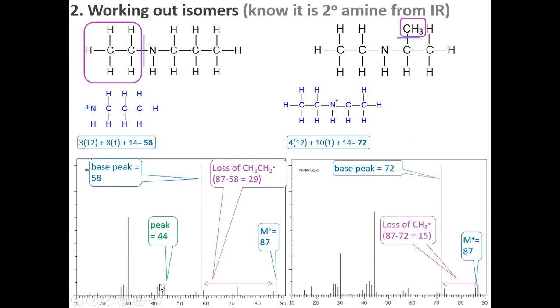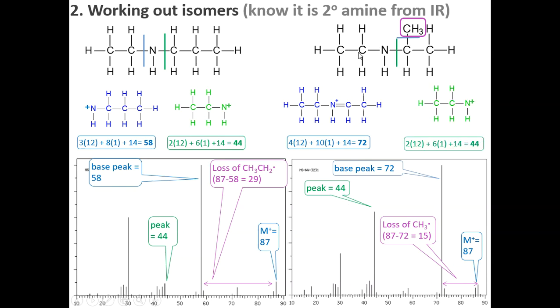We also have a peak at 44, and that is due to it breaking on this side. So remember, it could either break over here or it could break on the other side. And if it broke on the screen bit, we would end up with this type of cation. And so that gives you that peak over there. And we have something very similar where we have that same two carbon fragment with the nitrogen, with a mass of 44.